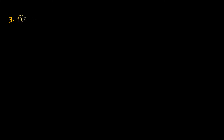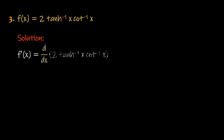Number 3: f of x equals 2 times the inverse hyperbolic tangent of x times the inverse cotangent of x. Solution: f prime of x is the derivative of f with respect to x. Apply the constant multiple rule and the product rule.